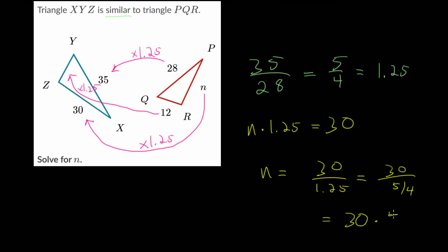And we're dividing by a fraction, which is the same as multiplying by this fraction's reciprocal, which is 4 over 5. And 30 divided by 5 is 6. And 6 times 4 is 24. Which means that our n value for this problem is simply 24.